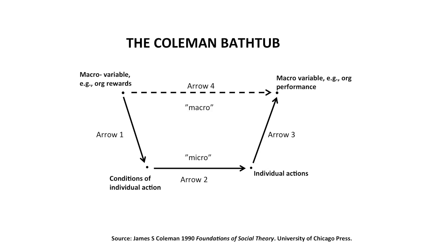But what precisely are microfoundations and why is it that we need them? To get a grip on these two questions, consider the diagram known as the Coleman boat or Coleman bathtub, after the famous Chicago sociologist James Coleman. In the context of this diagram, microfoundations in strategy are about at least three things. First, microfoundations are about decomposing macro-level constructs. Macro-level constructs or variables in the context of the diagram are placed in the northeastern and northwestern nodes.